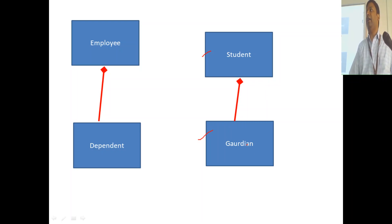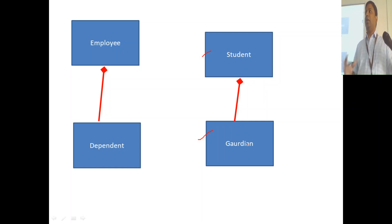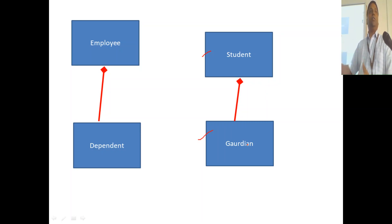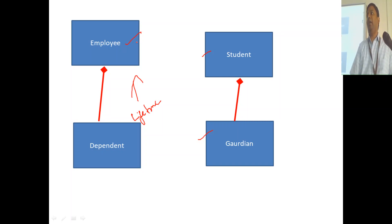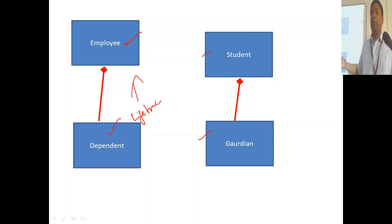If you remove the student, will the guardian's data remain in the system? No. So this is like a weak entity — the guardian is dependent on the student who exists in the system. If you delete the student, the guardian will be automatically deleted. Likewise, for an employee, when you remove the employee from the system, that dependent entity should automatically be removed. The lifetime of the dependent object is totally dependent on the main entity. This is composition, whereas in association the lifetime of the objects are independent of each other.